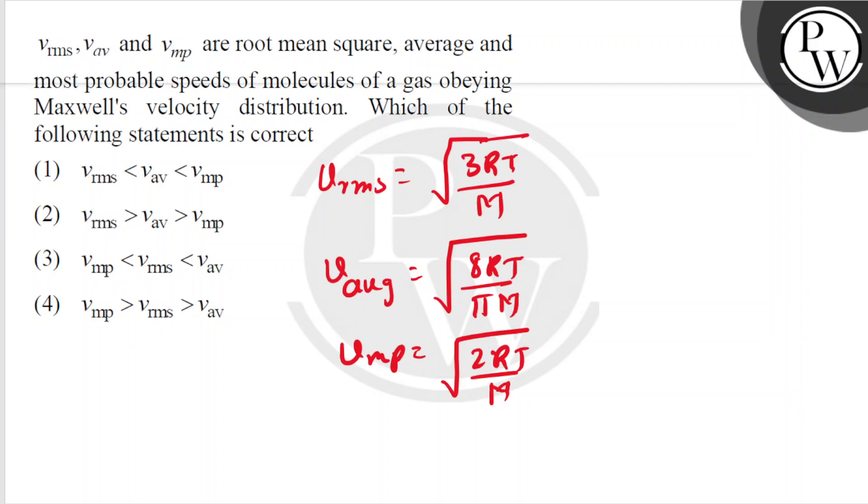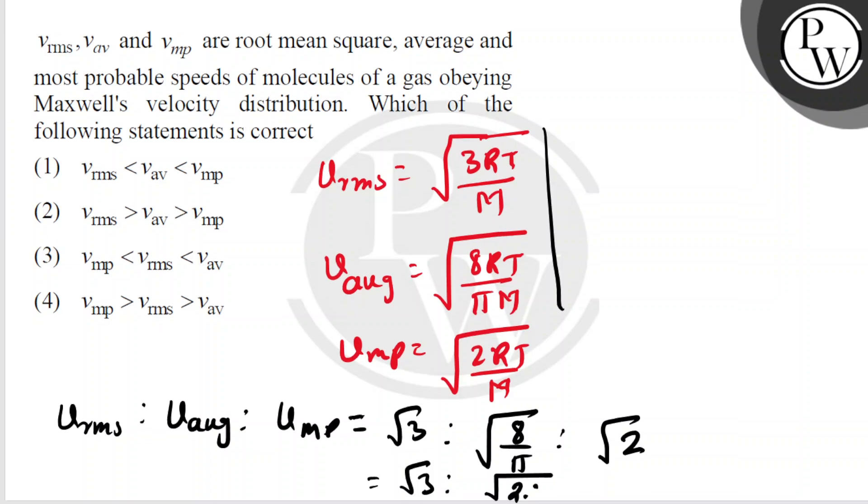If we take the ratio of all three, vrms to vaverage to vmost probable speed will be root 3 is to root 8 by pi is to root 2. Clearly we can say that here root 3, root 8 by pi is nearly 2.5, is to root 2.